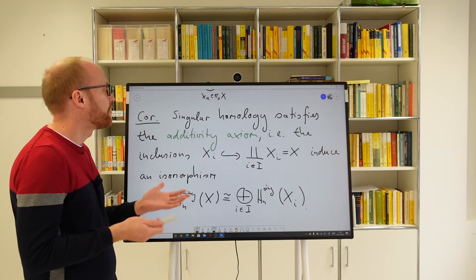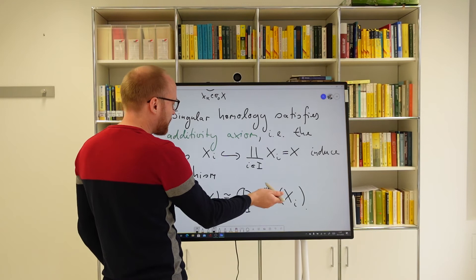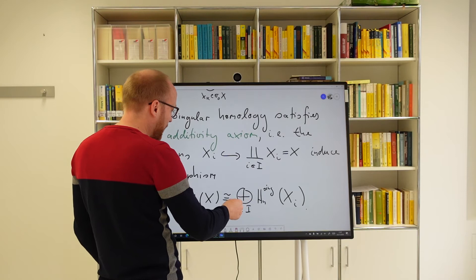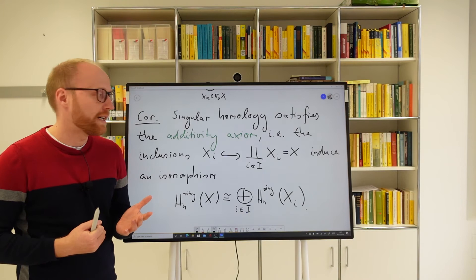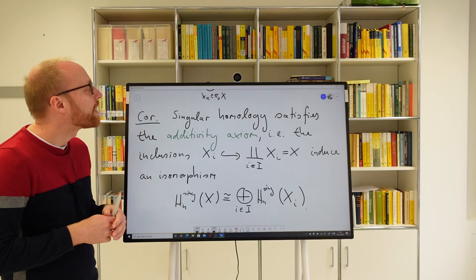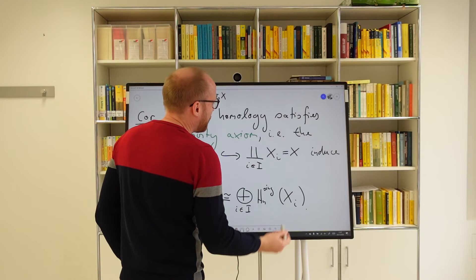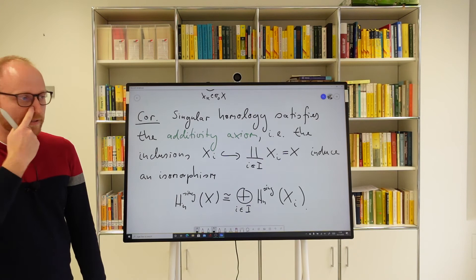The point here is that the index set I is allowed to be of arbitrary cardinality. If it were just finite, we wouldn't need this as a separate axiom — it would follow from the first four. The universal map from the coproduct's universal property goes from the right-hand side to the left-hand side, and this is an isomorphism by the same proof: the image of the standard n-simplex is connected, so it must be contained in some path component, and the Xᵢ's are unions of full path components by the coproduct topology.